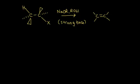We've already seen the mechanism for an E2 elimination reaction. In this video, we'll focus on bases and how to control the regioselectivity. Our alpha carbon is the one connected to our halogen, and our beta carbon is the one next to it. The double bond is going to form between our alpha and beta carbons. Note that for an E2 elimination, there is no carbocation in the mechanism, so you don't have to worry about any carbocation rearrangements.